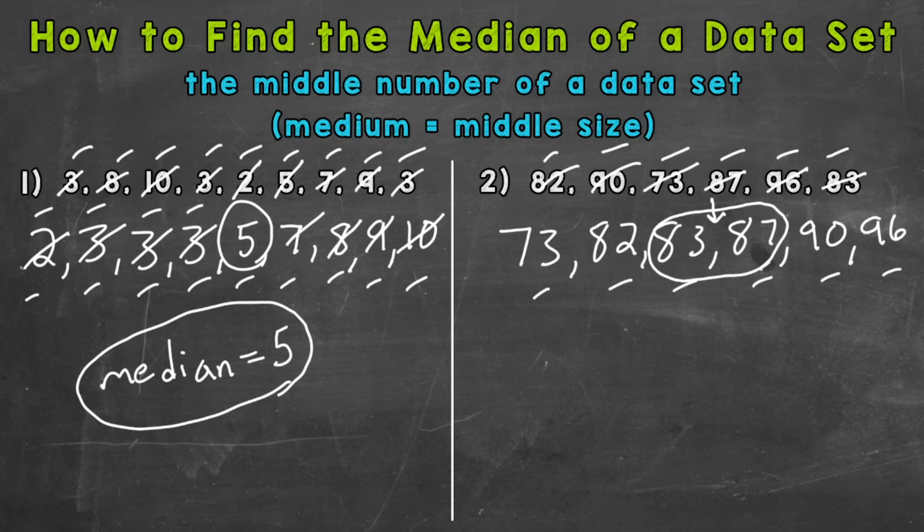As opposed to number one, we had an odd number of numbers in our data set. When you have an odd number of numbers, there will be one number directly in the middle. So we have two here. So once we find the two numbers directly in the middle of our data set, we take the average of those two and that will give us our median.